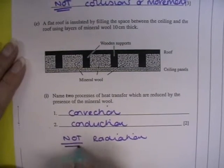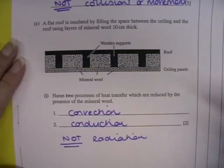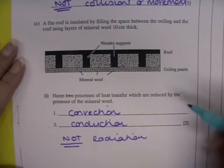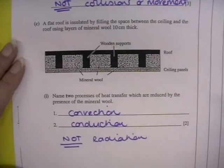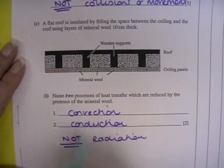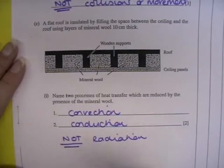That's the key point. You do not say radiation there because radiation is heat transfer by waves and waves can still pass through the mineral wool. So the two keys there are convection and conduction.